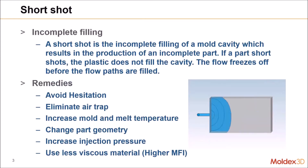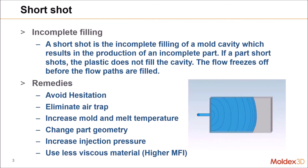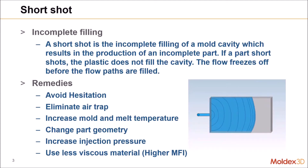So what is short shot? Short shot can be defined as an incomplete filling of the molding cavity, which results in product failure after ejection. How can one overcome this issue? The user can try to avoid hesitation in the part, eliminate as many air traps as possible, increase the mold and melt temperature, change the part geometry, or increase the injection pressure. If not, at last, you can use a less viscous material which has a higher MFI value.